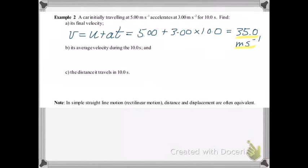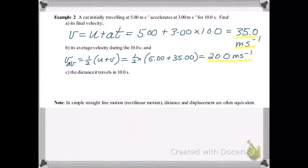B. Find its average velocity during the 10 seconds. So we can use this new formula we just saw. The average velocity is half of the initial plus the final, and that gives us 20 m per second.